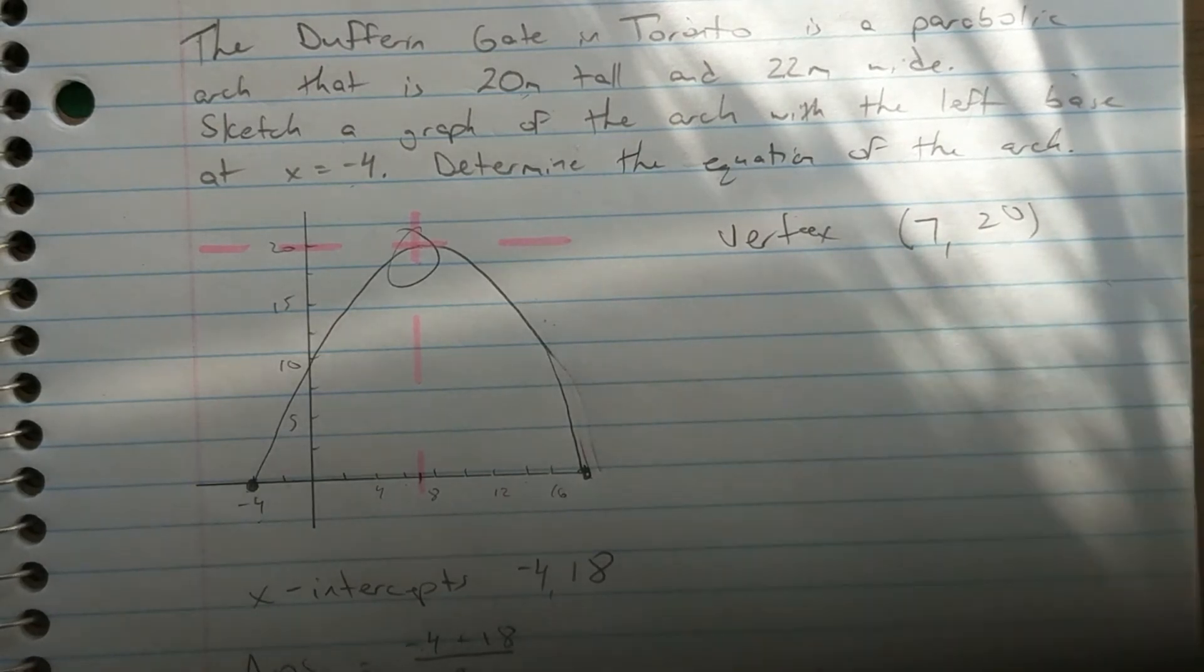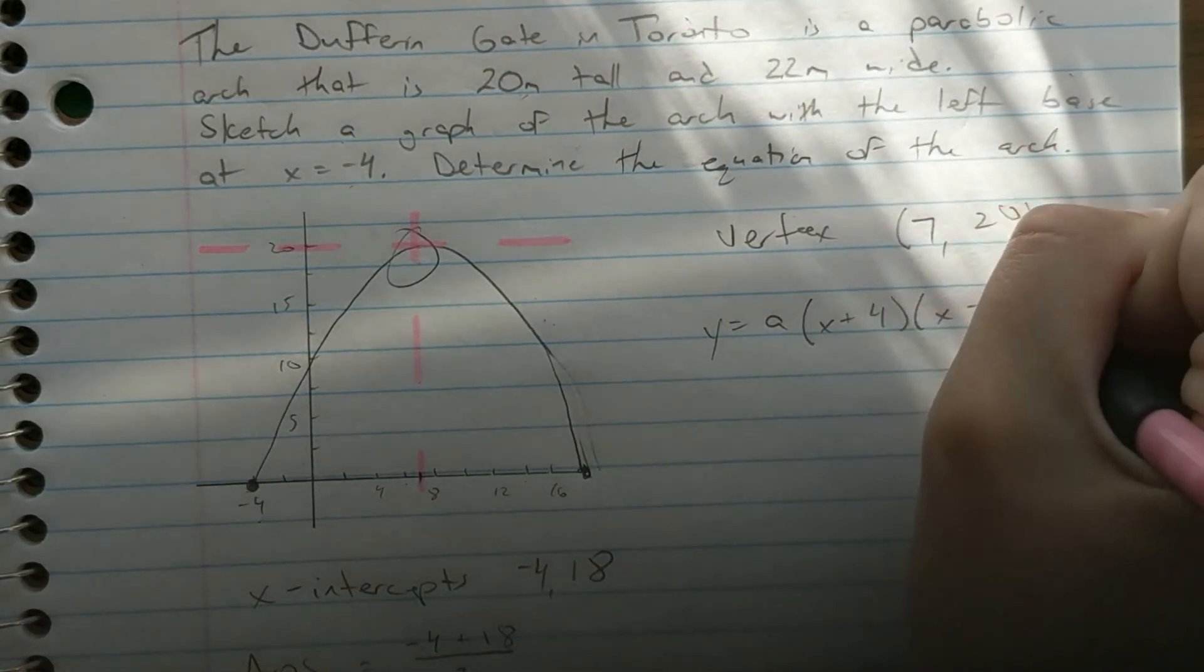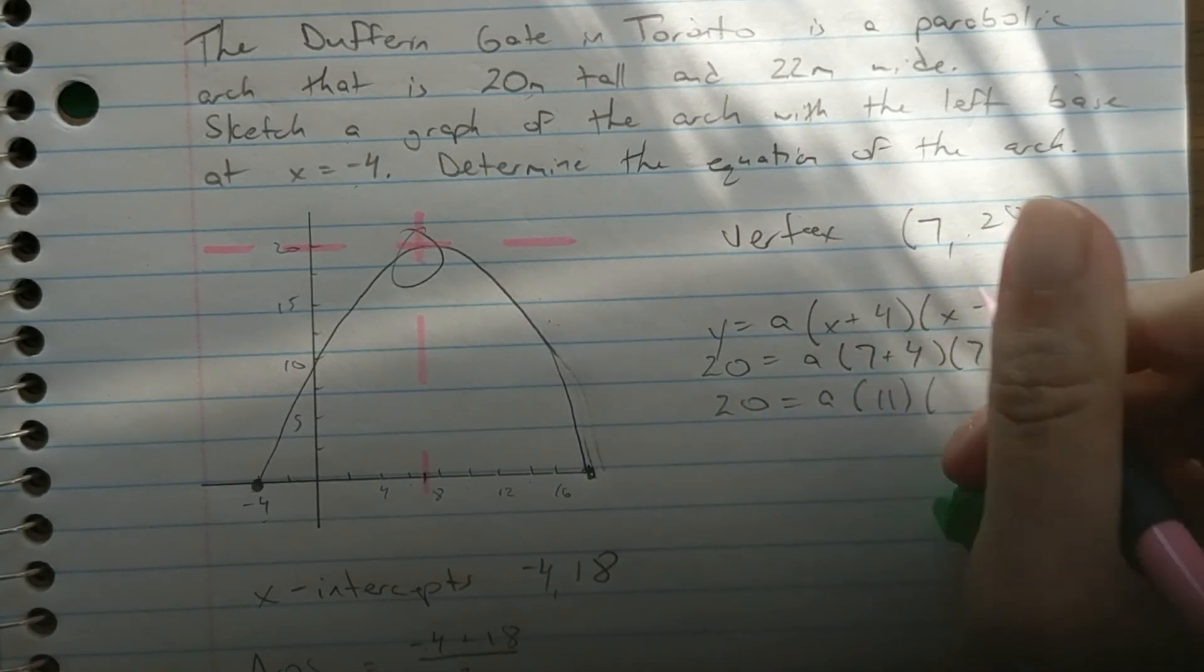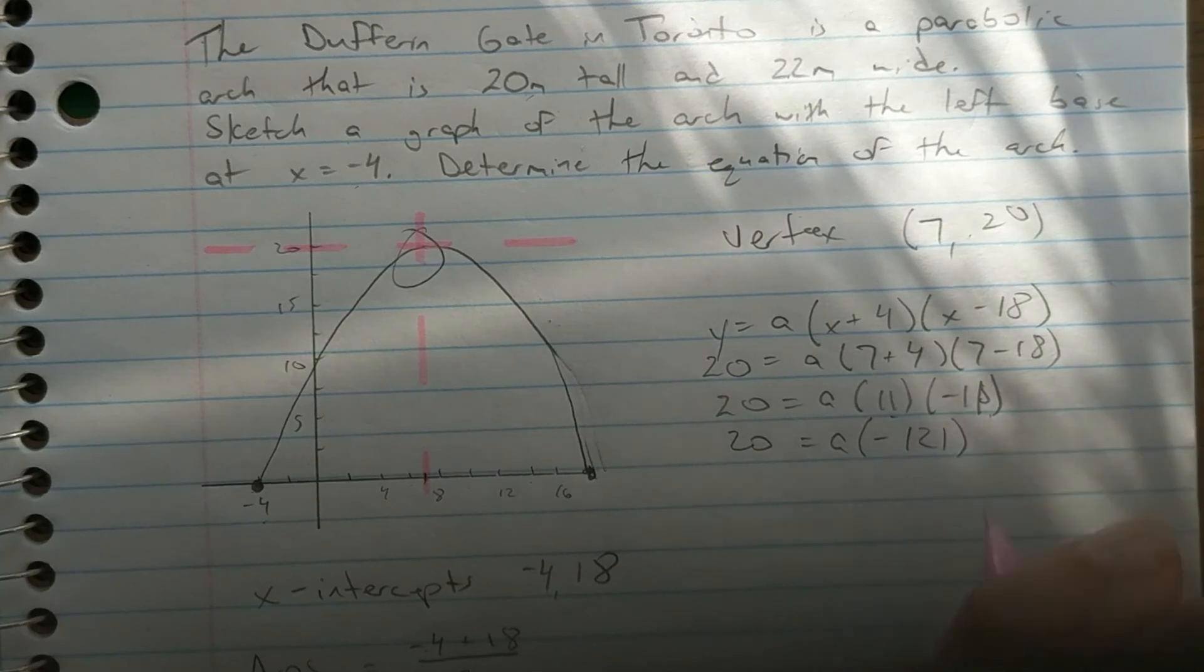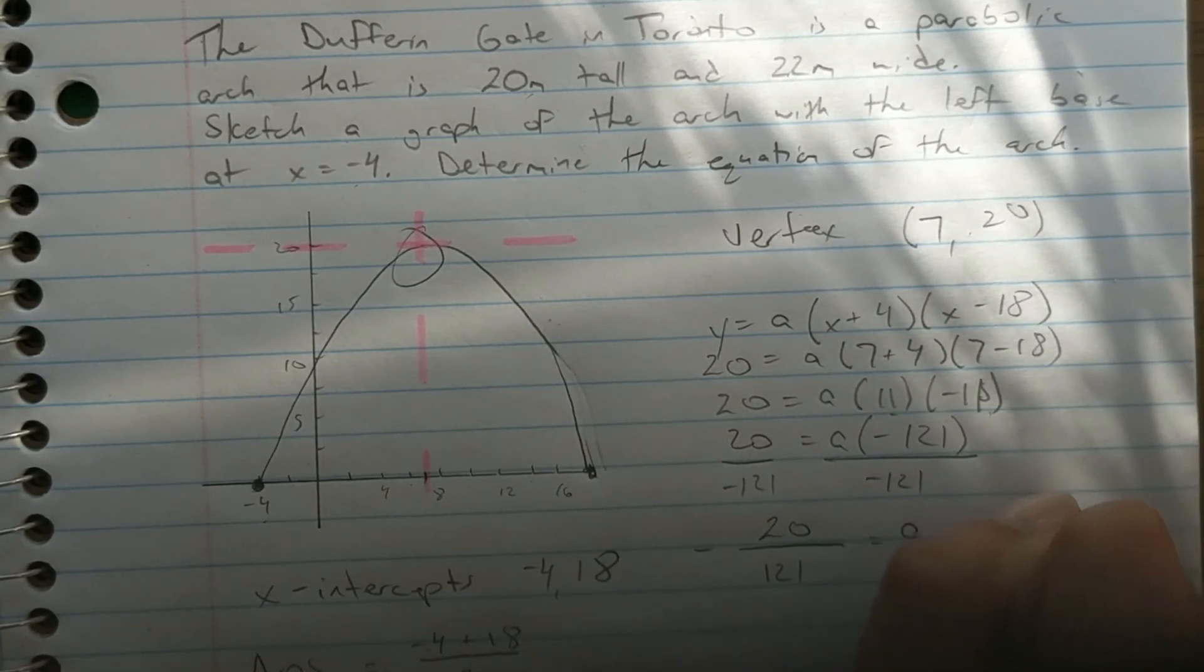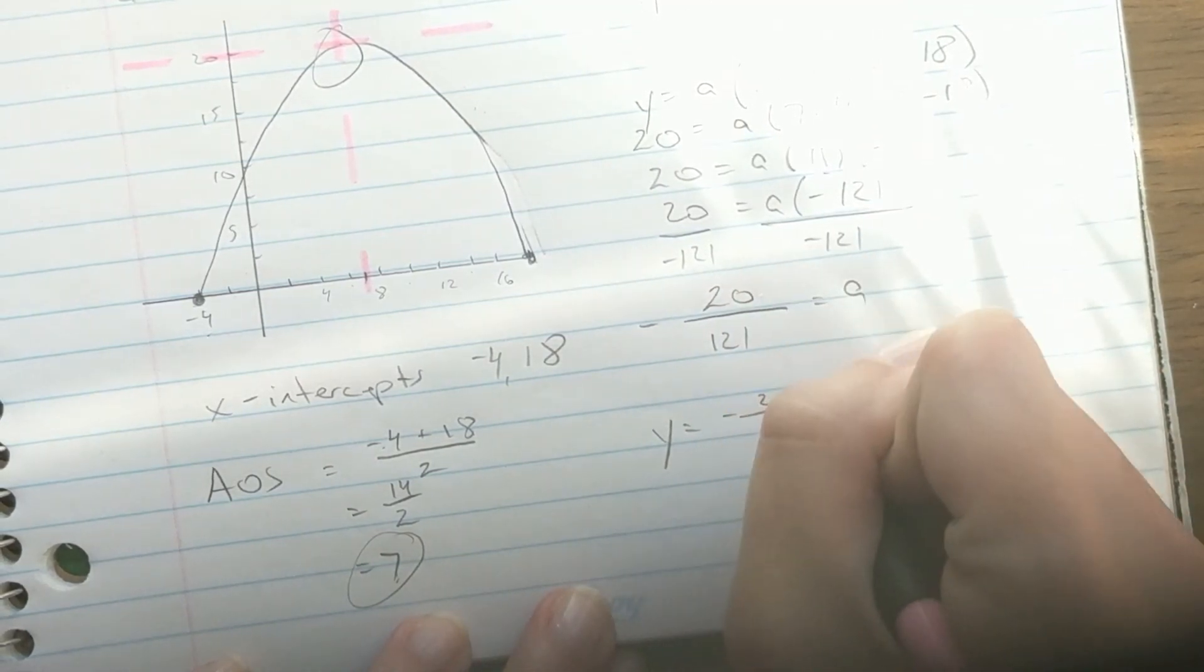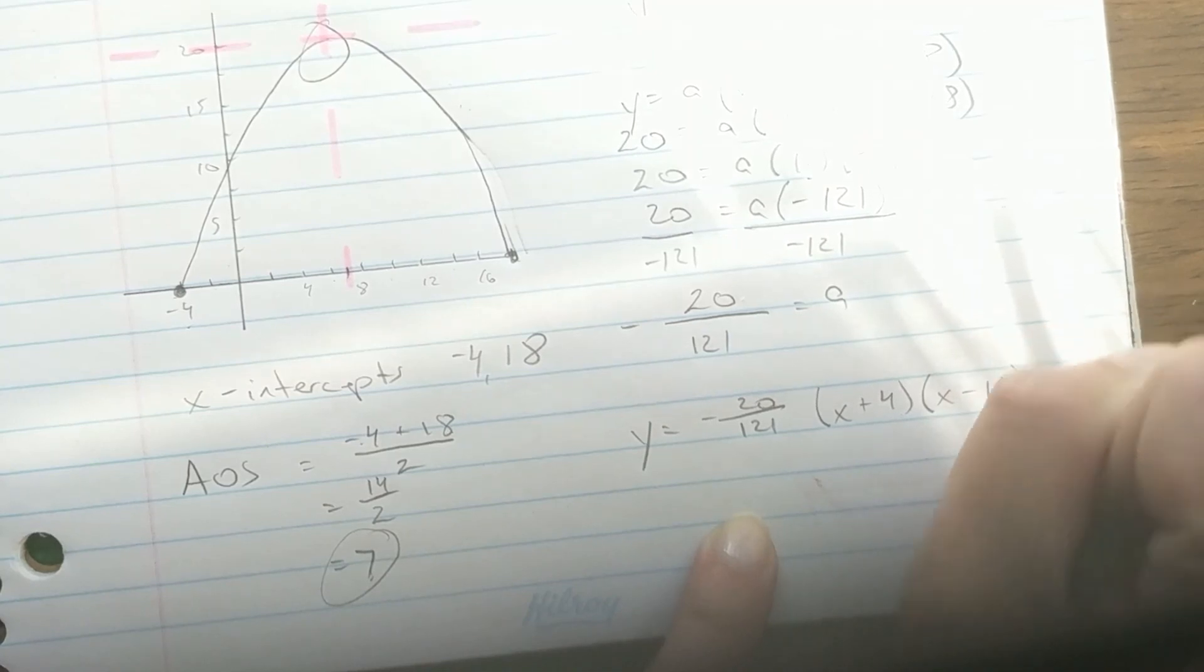So I'm going to use that information to find my final parabola. I'm going to start with my equation. Y equals A, x plus 4, x minus 18. And then plug in my vertex. 20 is equal to A, 7 plus 4, 7 minus 18. 7 plus 4 is 11, 7 minus 18 is negative 11. 11 times negative 11 is negative 121. And so we need to divide both sides by negative 121 in order to get A. A is then just equal to negative 20 divided by 121. We can finish off and write our final equation here. Y is equal to negative 20 divided by 121 times x plus 4 times x minus 18.